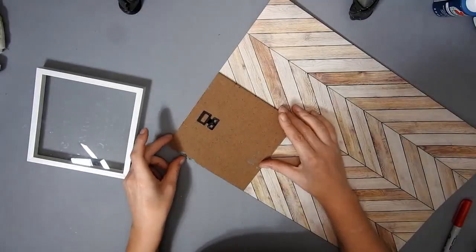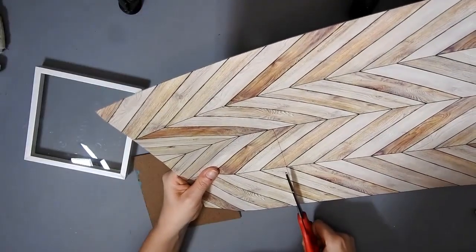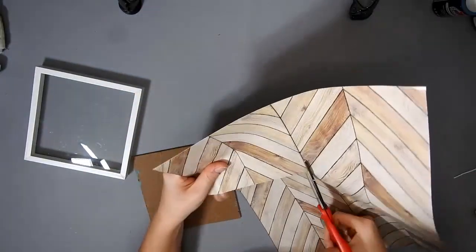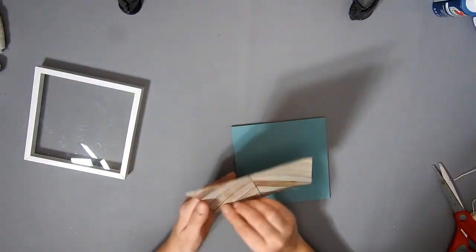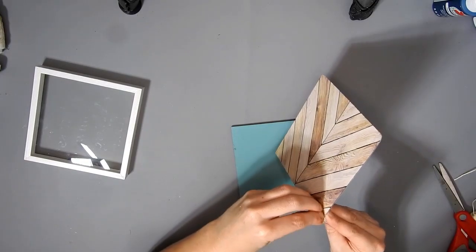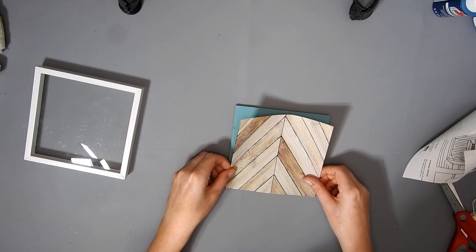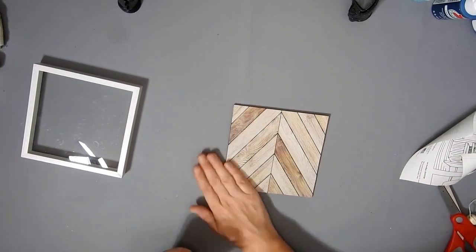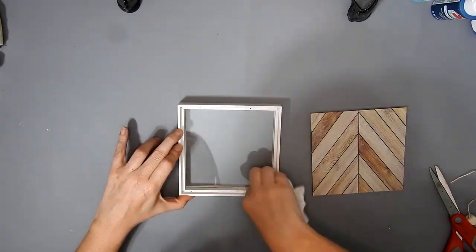I have some of the Dollar Tree wallpaper and I'm just gonna measure it with the backing and then cut it out with some scissors. I had painted this and I decided I didn't like it, so I decided to use the wallpaper instead. I just stick it down and then hot glue it back into the frame.